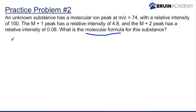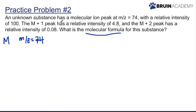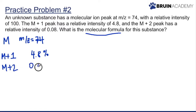We write down what we know: m/z = 74 with relative intensity 100. We always want the relative intensity of M to be 100 so we can scale properly. M+1 has a relative intensity of 4.8%, and M+2 has a relative intensity of 0.08%.